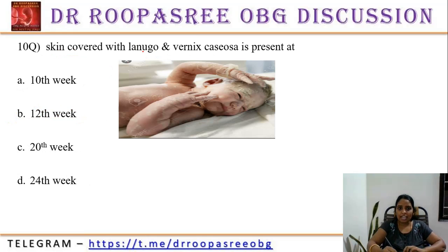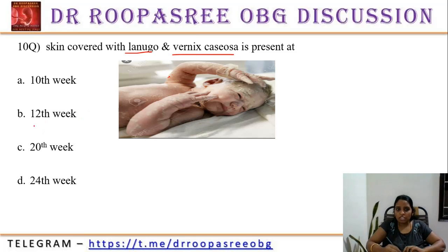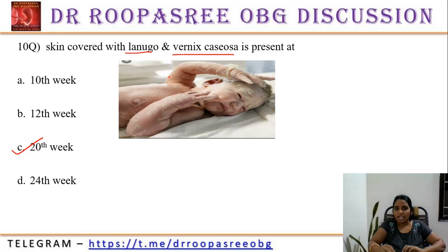The skin covered with lanugo hair and vernix caseosa starts forming from almost 20 weeks. Vernix caseosa is the whitish material from sebaceous gland secretions seen at the time of birth. From 20 weeks, we can observe this whitish material around the fetus. Lanugo refers to small hair particles present below the vernix caseosa, also seen from 20 weeks onwards.